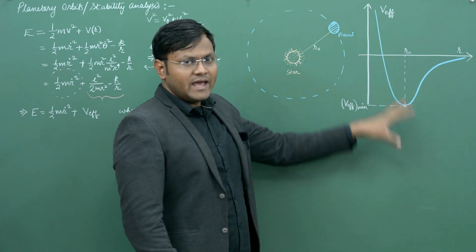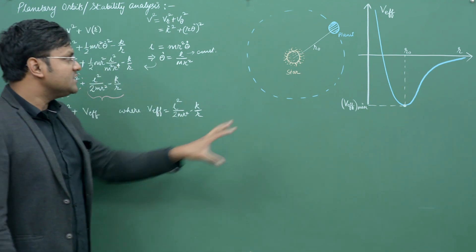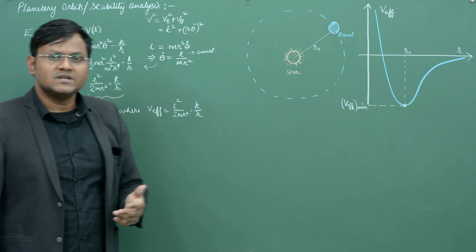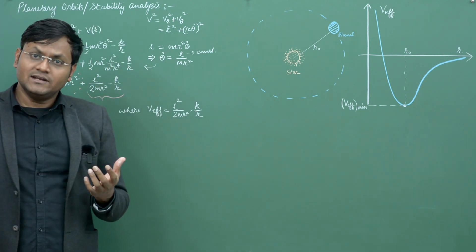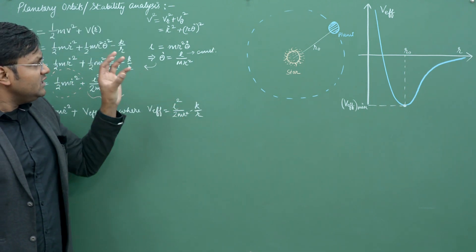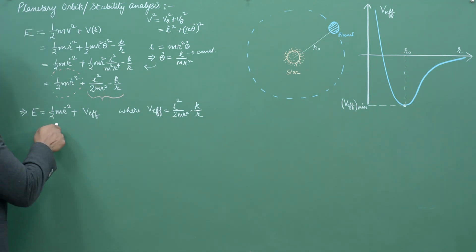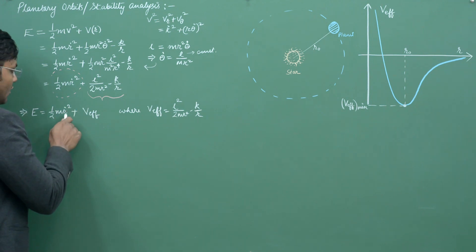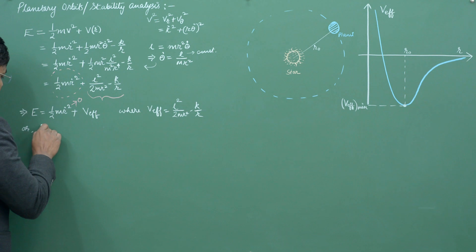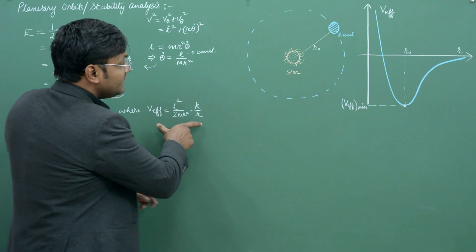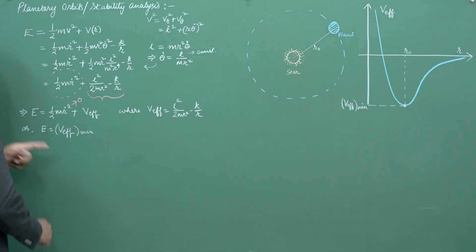By analyzing this effective potential energy diagram we can conclude a lot about different kinds of planetary orbits. I will restrict my discussion to circular orbits — orbits where the radius from the sun remains constant. Most planetary orbits are elliptical, but the circular orbit is a unique case. For a circular orbit, ṙ = 0, so the total energy reduces to E = V_eff, meaning the system sits exactly at the minimum of the effective potential.